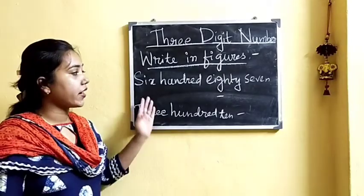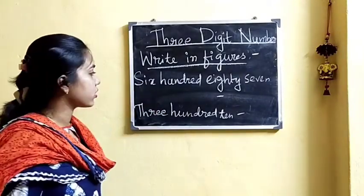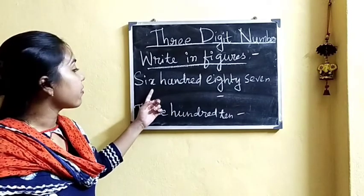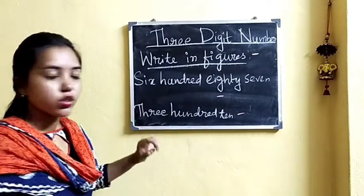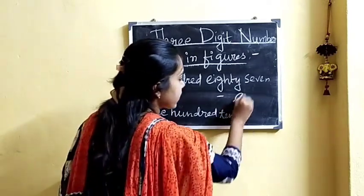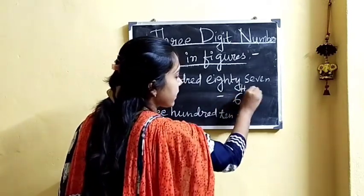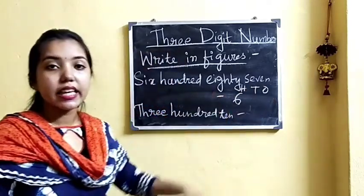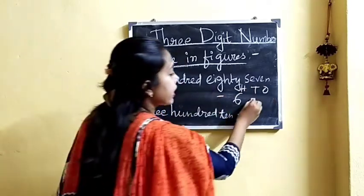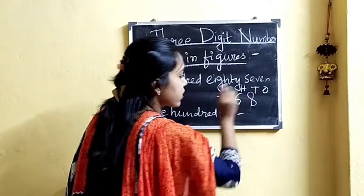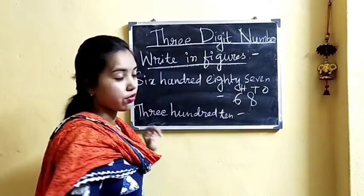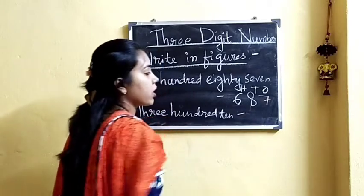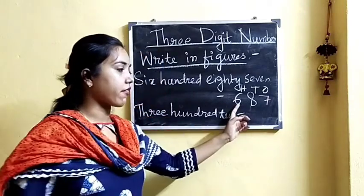Now let us write the given numbers in figures. Here we have 600, so we will write 6 in the 100s place. 80 means 8 tens, so we will write 8 in the 10s place. And 7 means 7 ones, so we will write 7 in the 1s place. So the number becomes 687.